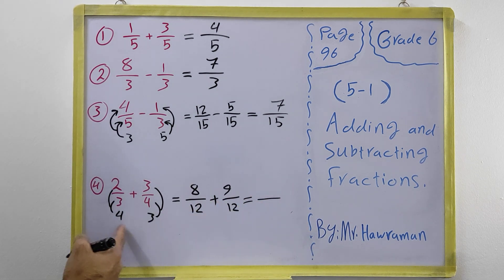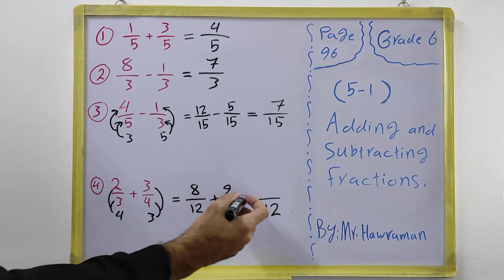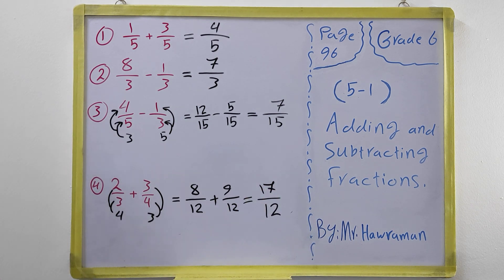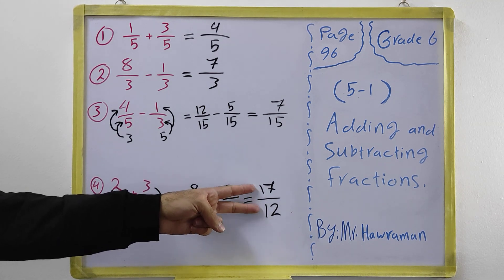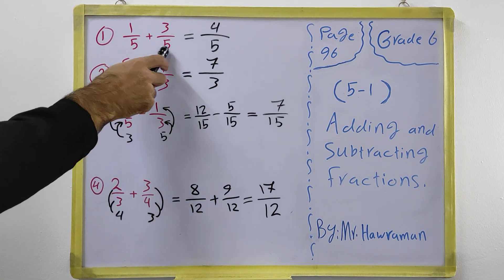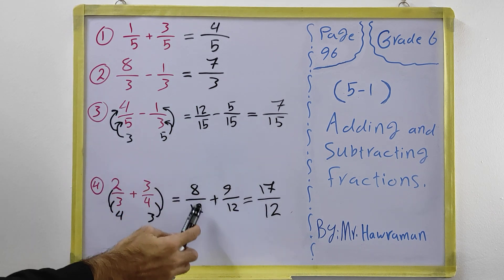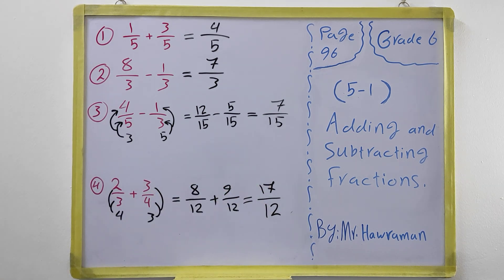The denominators are now the same — both 12. We add the numerators: 8 plus 9 equals 17, giving us 17/12. We check: divide by 2? No. By 3? No. By 5? No. So we leave it as 17/12, the simplest form. Remember: always make the denominators the same, write that denominator, then add or subtract only the numerators. Thank you for watching.